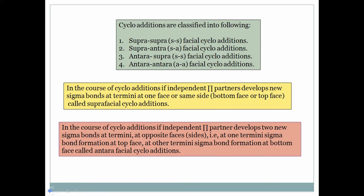Cycloadditions are classified into the following types: first, suprafacial-suprafacial; second, supra-antarafacial; third, antara-suprafacial; and fourth, antara-antarafacial. In a suprafacial cycloaddition, the pi partner develops a new sigma bond at its termini on one face — the same side — and this is called a suprafacial cycloaddition.